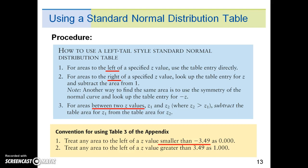Lastly, anything less than negative 3.49 can be treated as 0, and any z value greater than 3.49 can be treated as 1.